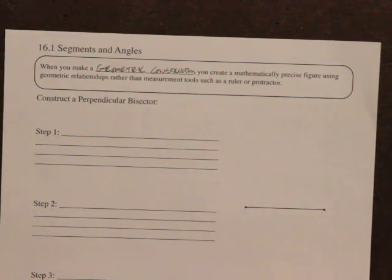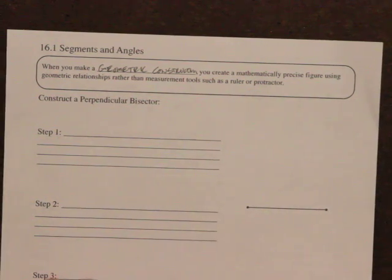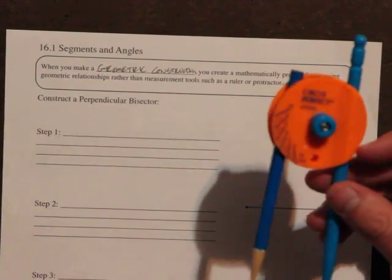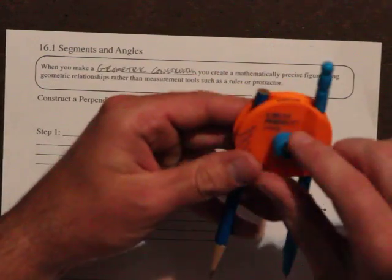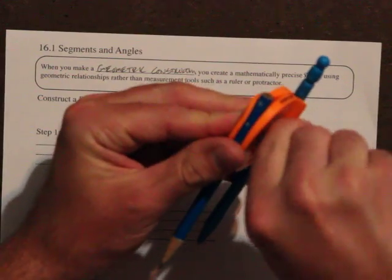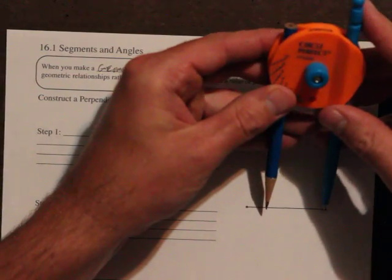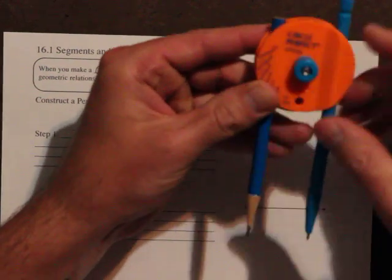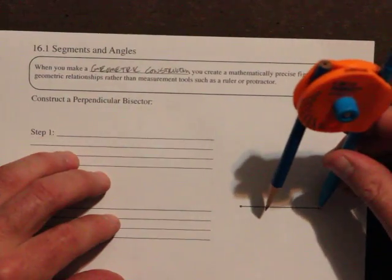And then we're going to write down the steps that we took. Okay, so first we're going to use our compass and we're going to open it up to a little more, or a lot more, than halfway across this segment - so maybe three-quarters of the way across the segment. And then I'm going to draw...